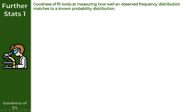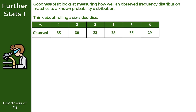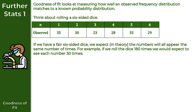To help illustrate this concept, let's think about rolling a six-sided dice. Let's imagine we roll this dice 180 times, and this is what we get. So n here is the number that we land on — one, two, three, up to six. The observed value is how many times we get that number, so we get 35 ones, 32 twos, and so on. Now, if we have a fair six-sided dice, we would expect in theory that the numbers will all appear the same number of times. So if we roll the dice 180 times, we would expect to see each number 30 times.